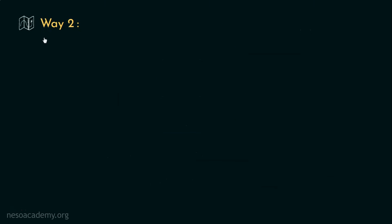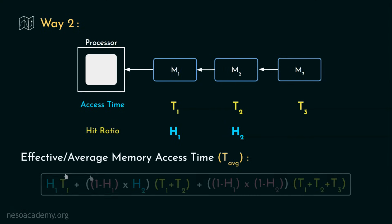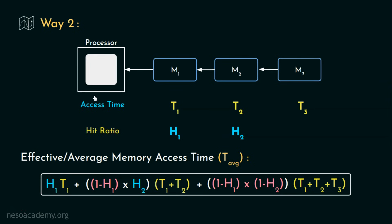The second way is to interface the memory units level-wise. That means if the required instruction can't be found in M1, the processor will go and look for it in M2, and if it's not even there, the seeking process continues to the next level. In that case, the formula changes because the processor is not simultaneously connected to all memory units. If the processor is looking in the (n+1)th level, it means it already looked in the nth level and couldn't find it there, so both access times are being considered cumulatively.